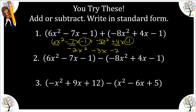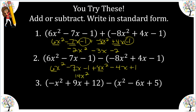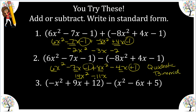Number two, we are subtracting this trinomial and this trinomial. We have six x squared minus seven x minus one, and we're going to distribute this understood negative one. That gives us a positive eight x squared minus four x plus one. Now we can combine the quadratic terms: 14 x squared. Our linear terms give minus 11 x, and then our constants become zero. So this is still quadratic because it has a degree of two, but it's a binomial because it has two terms.